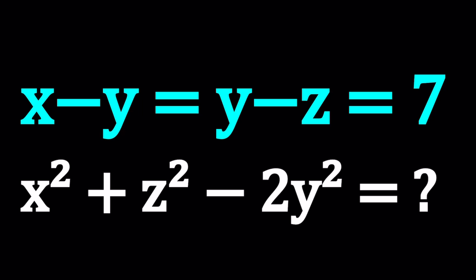We're going to find a numerical value for the second expression, which is x squared plus z squared minus 2y squared. I'll be presenting at least three methods and let's see how that goes.